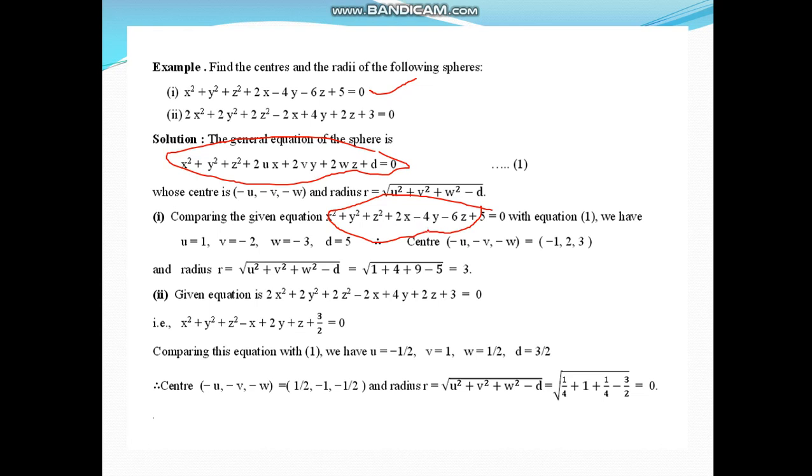2v = -4, so v = -2. 2w = -6, so w = -3. Constant d = 5. But center is given by (-u, -v, -w), so it is (-1, 2, 3). And radius: under root of this formula, so we can find radius.